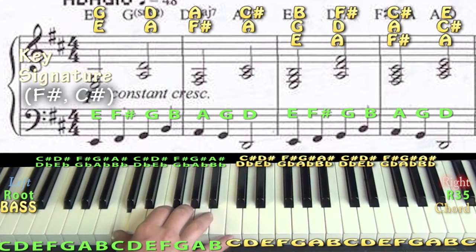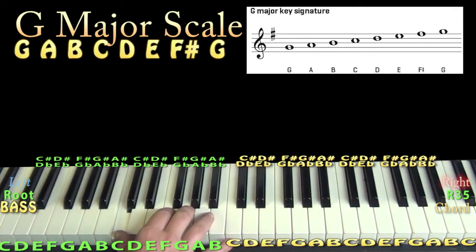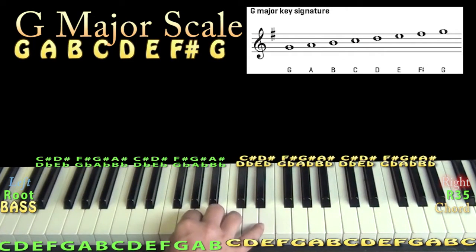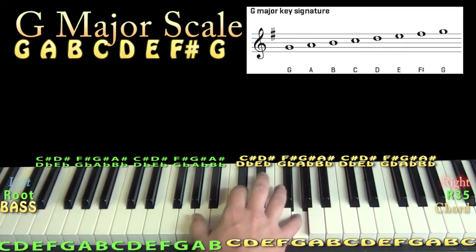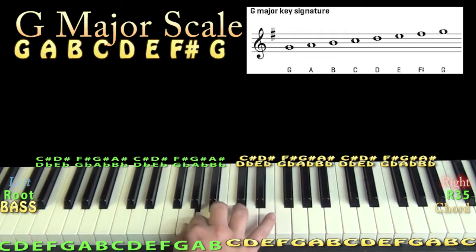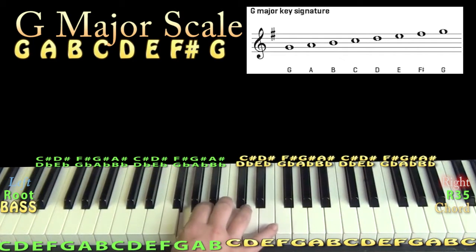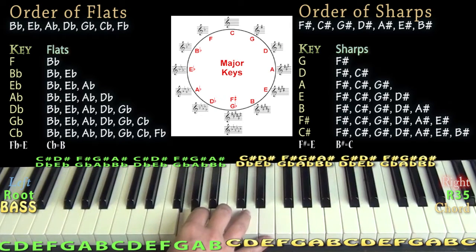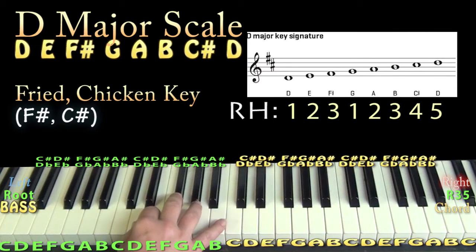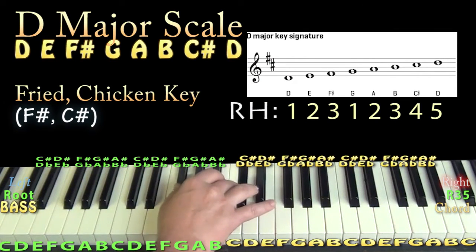There's something called the order of sharps: F sharp, C sharp, G sharp, D sharp, A sharp, E sharp, B sharp — 'Fried Chicken Goes Down Awful Easy Brother.' If you see one sharp, you're in G major. If you see two sharps, that's F sharp and C sharp, which means you're in D major — and that's the key of Sweden.